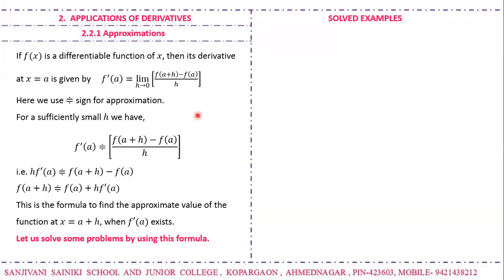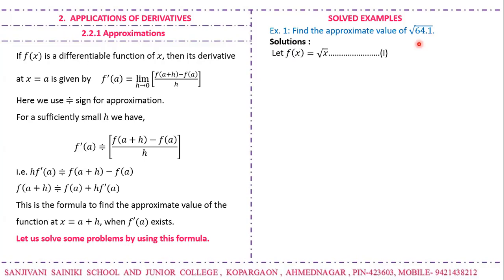Let us see a solid example on approximation. The first example: find the approximate value of √64.1. We always have to search for a function linked to the given problem. Here a square root is given, so we take f(x) = √x. Differentiating with respect to x, we get f'(x) = 1 / (2√x).